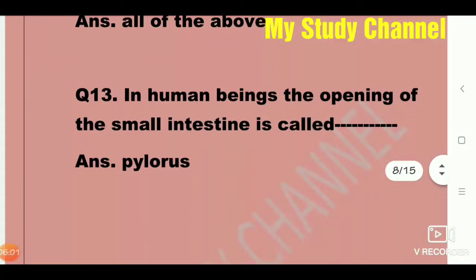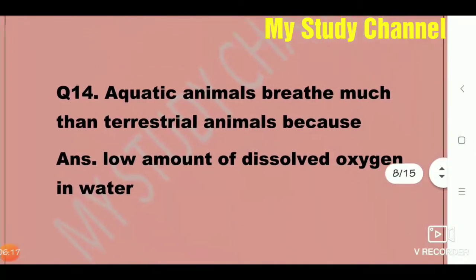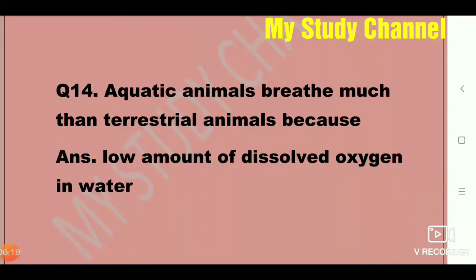Next question: In human beings, the opening of the small intestine is called — the answer is pylorus. Next question: Aquatic animals breathe much faster than terrestrial animals because of the low amount of dissolved oxygen in water.